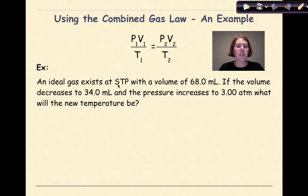Let's look at an example. An ideal gas exists at STP with a volume of 68 milliliters. If the volume decreases to 34 milliliters and the pressure increases to 3 atmospheres, what will the new temperature be? The variable we're looking for is a new temperature. For this particular example, because we have so many different things going on, I'm going to list out all my different variables. So I'm going to say P1 is equal to my initial pressure. They're telling me that my pressure is at STP, which means I'm going to use atmospheres here, so 1 atmosphere. And I'm also choosing atmospheres because my P2 will ultimately be 3 atmospheres. So there's my P1, my V1. My V1 is listed at 68 milliliters, so 68 milliliters.